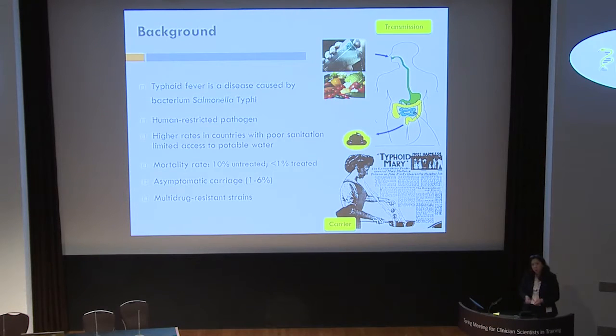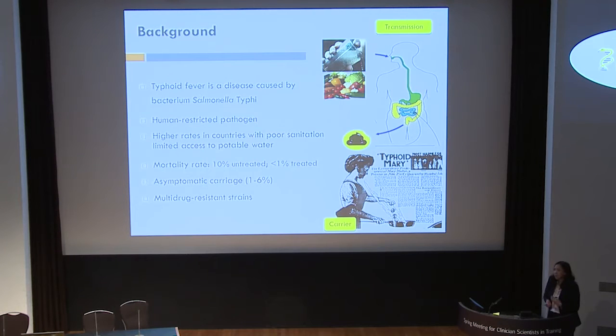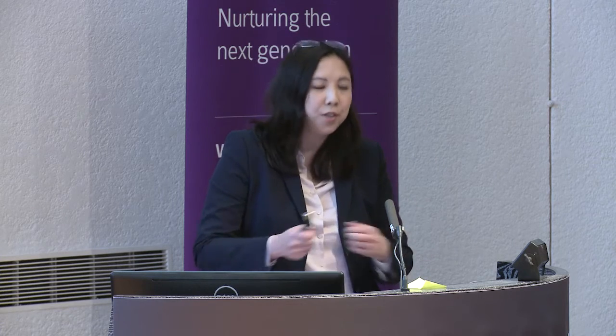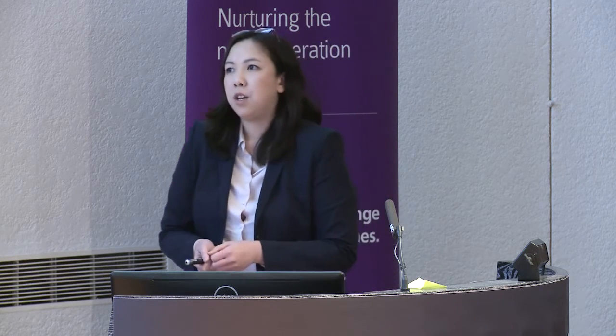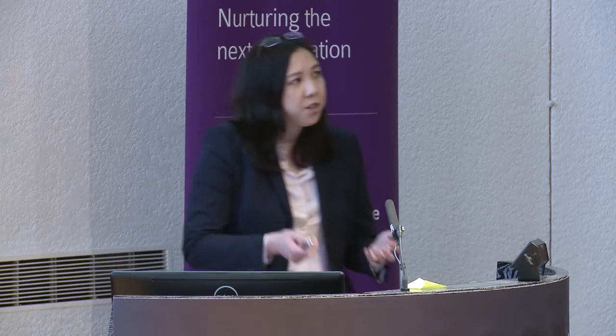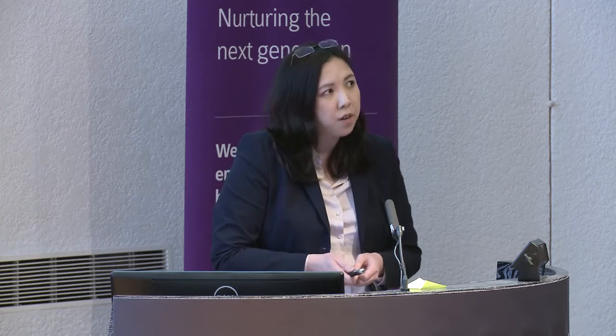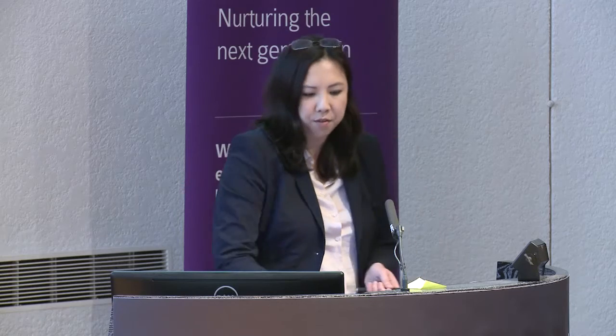Many of you have probably heard of Typhoid Mary. She was the first person in the US identified as an asymptomatic carrier of typhoid. She was a cook in the New York area between 1900 and 1915 and during that time infected more than 50 people with typhoid, three of whom died. In addition, there are multi-drug resistant strains of typhoid circulating in parts of Southeast Asia, South Asia, and parts of Africa.